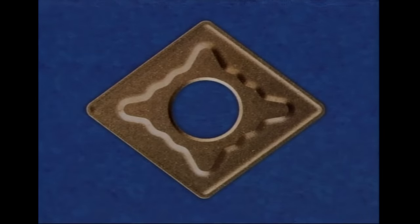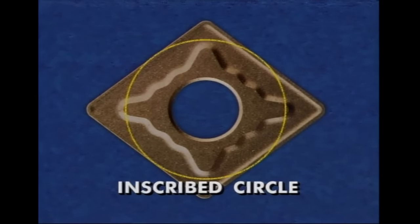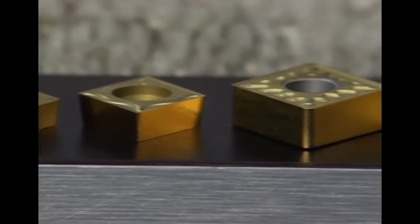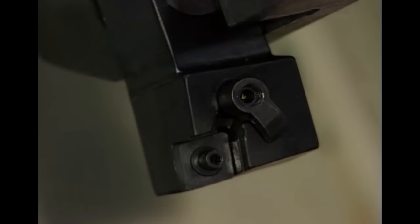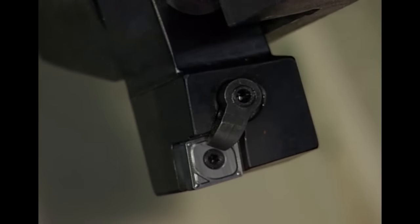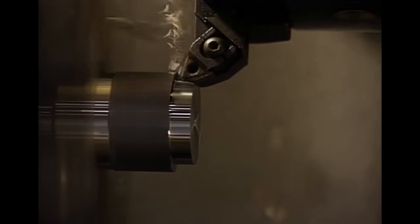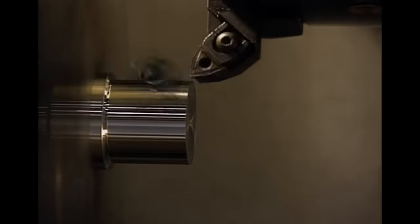Insert size is designated by the largest circle which can be inscribed within the perimeter of the insert, called the inscribed circle or IC. As the size of the insert increases, so does the insert's thickness. Insert size is directly connected to the tool holder selected — the pocket size of the tool holder and the inscribed circle size of the insert must be selected together. Insert size is selected according to the maximum depth of cut to be taken and the lead angle, providing maximum cutting edge engagement.